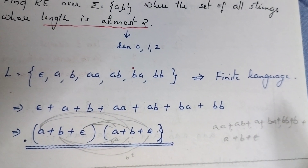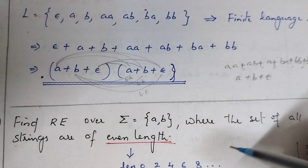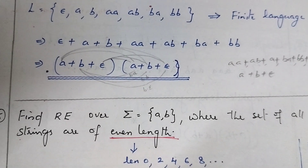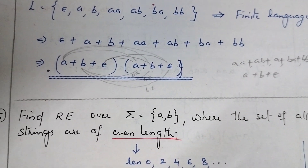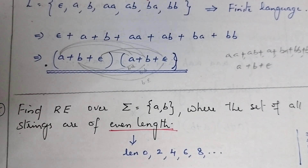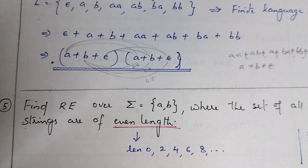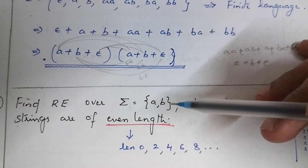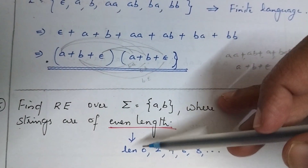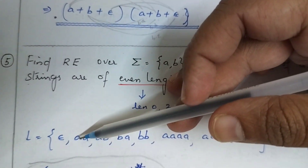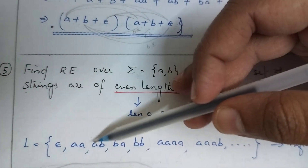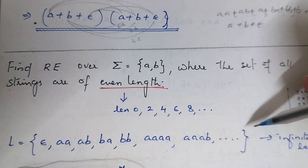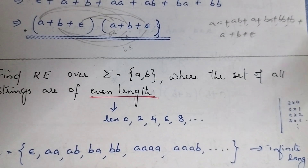Next: set of all strings of even length. Even length means the language accepts strings of length 0, 2, 4, 6, 8, etc. Writing this as a language listing would go to infinity: epsilon, then aa, ab, ba, bb for length 2, then all length-4 strings, then length 6, length 8, and so on. So we need to think and write the regular expression using Kleene star — we can't just list them.